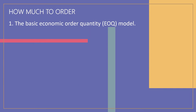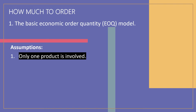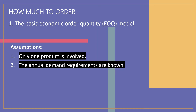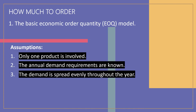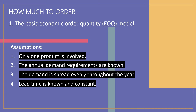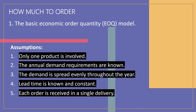The basic economic order quantity model is the simplest of the three models. It is used to identify a fixed order size that will minimize the sum of the annual costs of holding inventory and ordering inventory. The basic model involves a number of assumptions: only one product is involved; the annual demand requirements are known; the demand is spread evenly throughout the year so that the demand rate is reasonably constant; lead time is known and constant; each order is received in a single delivery; and there are no quantity discounts.